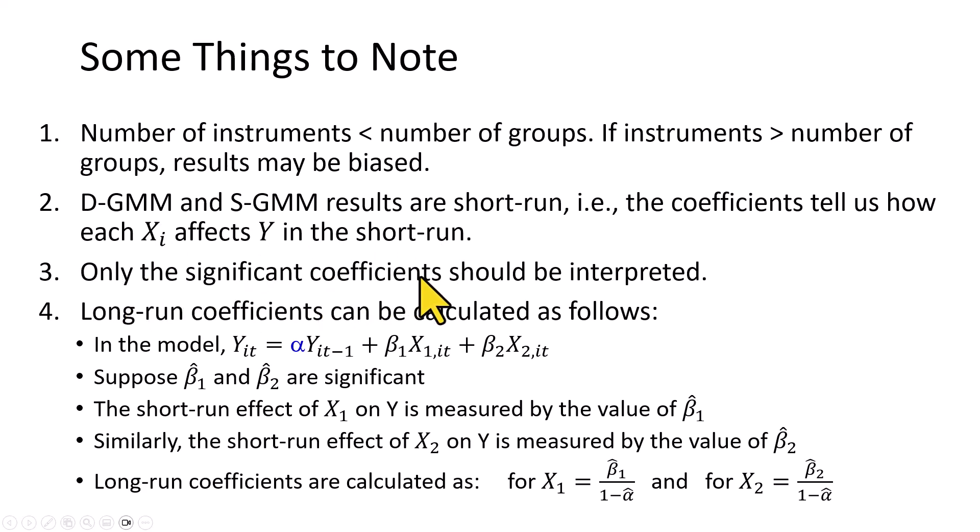And finally, for the long-run coefficients, if you are interested in those, then let's assume that our result shows that the coefficients for x1 and x2, namely beta 1 hat and beta 2 hat, are statistically significant, meaning that in the short run, that x1 and x2 affect y. The corresponding long-run coefficients can be calculated by dividing that coefficient by 1 minus the coefficients of the lagged dependent variable, as I show here for x1 and here for x2. But again, this has to be based on the coefficients that have been found to be statistically significant.